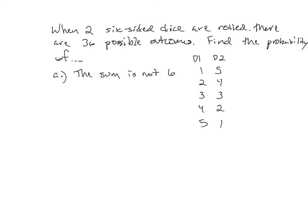Sorry about that, I got something in my throat. So there are five different ways to get a sum of six out of 36 outcomes. If I want not-six, then there are 31 out of 36 possibilities that are not six — because 36 minus 5 is 31. There's a pretty high probability of not getting a sum of six: 86.1% chance.